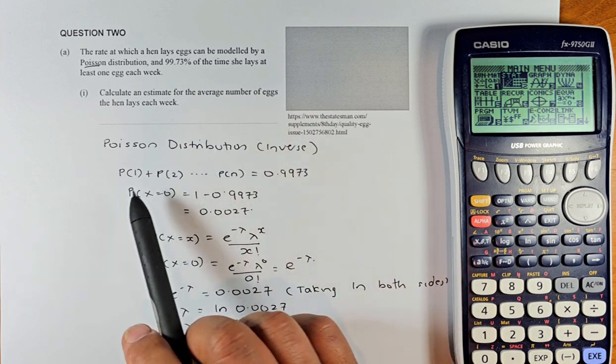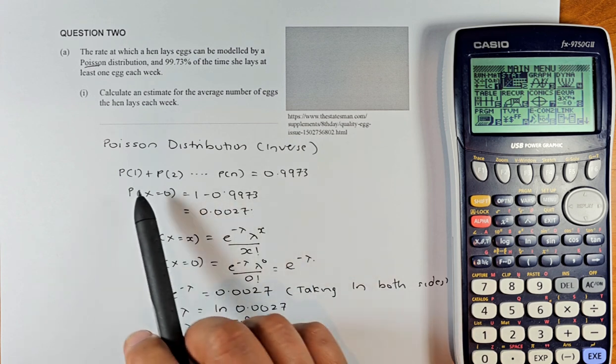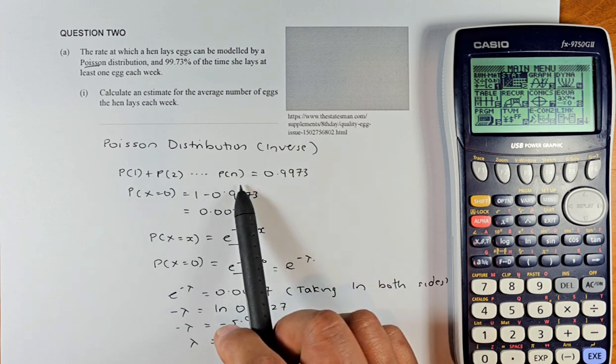So X equal to 1, 2, 3, 4, 5 to N is going to be 0.9973 because it says at least 1. So include 1, 2 and up to N.